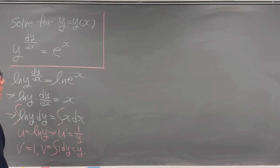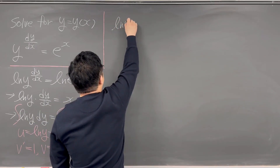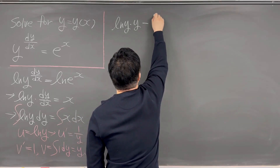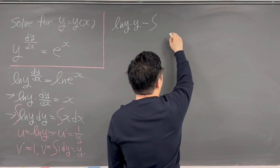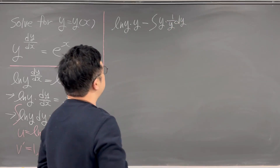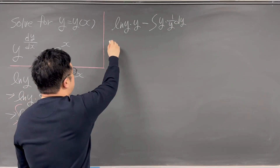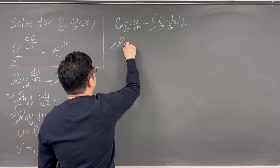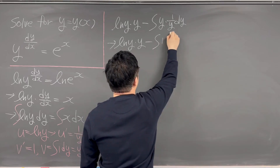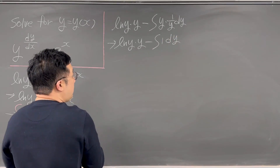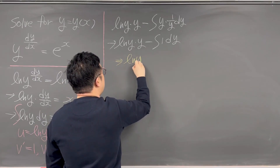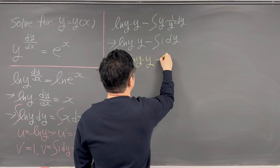Based on this setup, we can work out ln(y) times y, minus the antiderivative of y times 1/y dy. That simplifies to ln(y) times y, minus the antiderivative of 1 dy, which gives us ln(y) times y minus y.